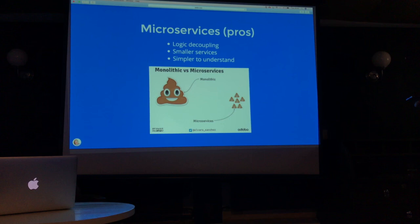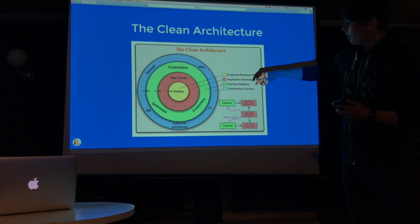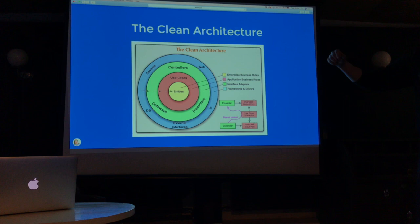So knowing what clean architecture is, we want this in each of our services — whether it's a monolith or a microservice — we want this everywhere, because there's something called the dependency rule. And the dependency rule says that you want your dependencies in code to go only one way. What this means is that UI knows about presenters, presenters know about use cases, use cases know about entities, but not the other way around.